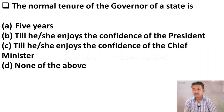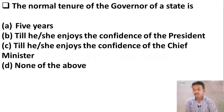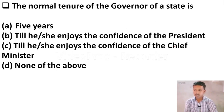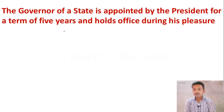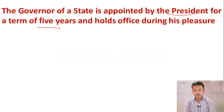Next question: The normal tenure of the Governor of a State is — Option A: 5 years. Option B: till he or she enjoys the confidence of the President. Option C: till he or she enjoys the confidence of the Chief Minister. Option D: none of the above. The right answer is Option A — 5 years. The Governor of a State is appointed by the President for a tenure of 5 years, and he holds office during the President's pleasure.